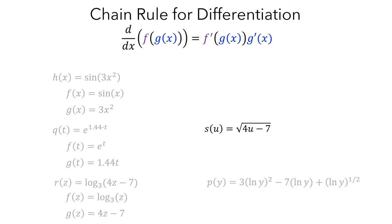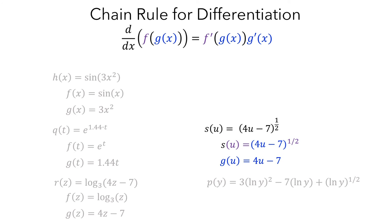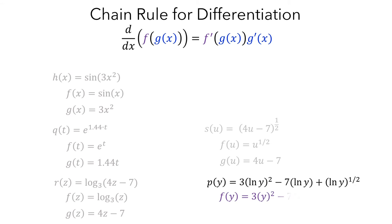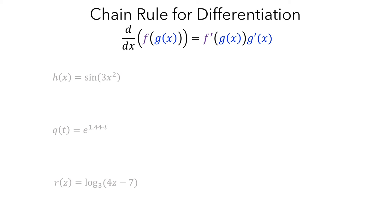For s, if you rewrite the square root as a one-half power, then you can use u to the one-half power as the outside function, and 4u minus 7 as the argument. Finally, for p, you could compute the derivative of each term separately. Alternatively, you could use 3y squared minus 7y plus y to the one-half as the outside function, and natural log as the argument. Now let's look at h, q, and r, and actually use the chain rule to compute these derivatives.